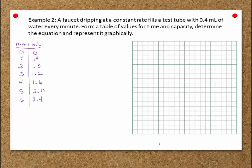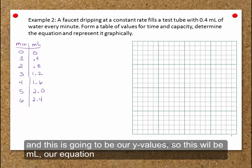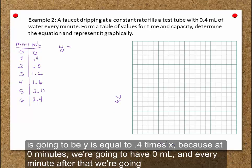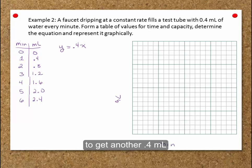So we make this x. And this is going to be our y value. So this will be milliliters. Our equation is going to be y is equal to 0.4 times x, because at zero minutes we'll have zero milliliters, and every minute after that we're going to get another 0.4 milliliters.